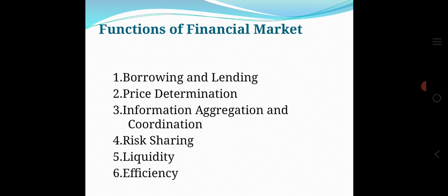First function, borrowing and lending: Financial markets permit the transfer of funds from one agent to another for either investment or consumption purpose. Second function, price determination: It provides means by which prices are set both for newly issued financial assets and for the existing stock of financial assets. Third function, information aggregation and coordination: It acts as collectors and aggregators of information about financial asset values and the flow of funds from lenders to borrowers.